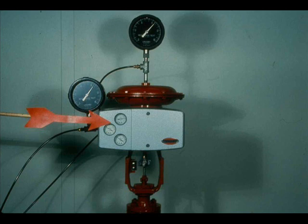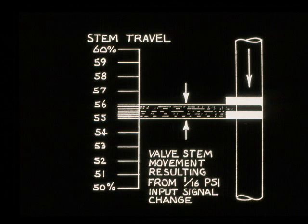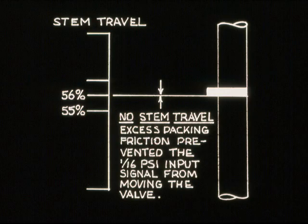The control valve positioner overcomes these factors and makes the valve stem move. Consider a control valve without a positioner that has an input change of one-sixteenth PSI. This one-sixteenth PSI is the only force available to move the valve stem. If there was no resistance, the valve stem would move the corresponding amount. But if the packing was too tight, the valve stem wouldn't respond.